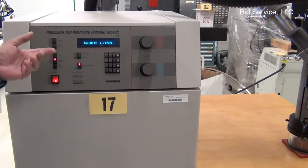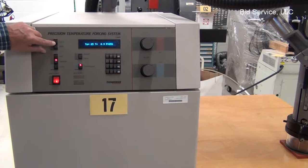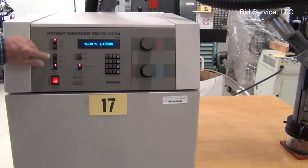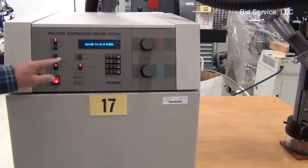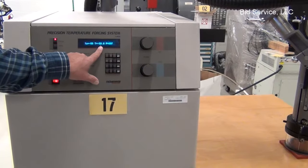To initiate the cycle sequence, once you've got it all programmed, just hit cycle. The cycle light comes on, it'll go down to the cold. And the set point here is minus fifty-five and you can watch the actual here.